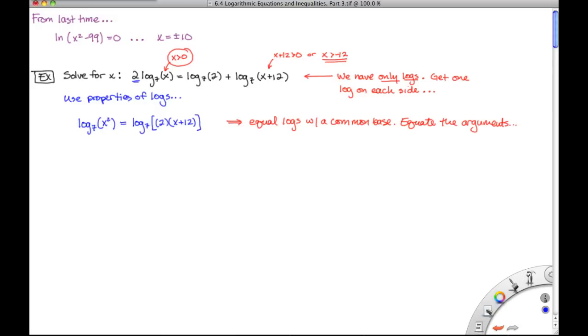So long story short, what we can now say is x squared has to be equal to 2 times x plus 12 in order to maintain that equality. And now all we have to do is we have to solve this equation. So if we start to clean this up, we'd get x squared is equal to 2x plus 24. And we're clearly dealing with a quadratic here, so let's go ahead and set this equal to 0. So we'll have x squared minus 2x minus 24 is equal to 0. This will factor. So we've got x minus 6 times x plus 4 is equal to 0.